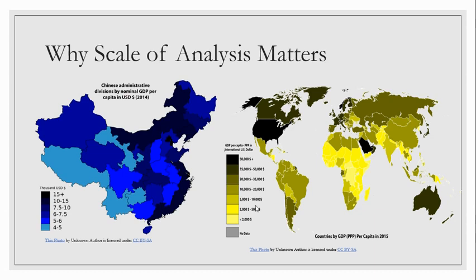For our purposes, we're only going to be looking at a handful of scales: global, regional, national, and local. The data itself needs to be assembled in some way that makes it comparable from place to place — which could be as simple as counting people, since a person is a person no matter where they live. Or it could be something like economic activity, measured by a statistic like gross national product converted into dollars. Or it could be something like relative poverty, which requires a way to measure poverty that accounts for different costs of living and various currencies.